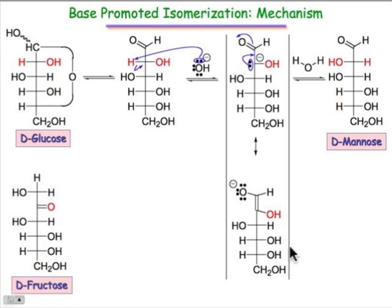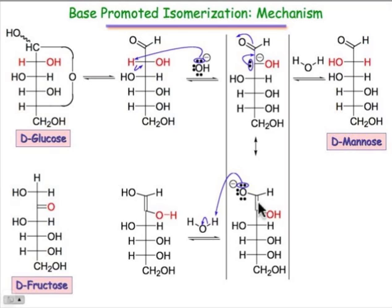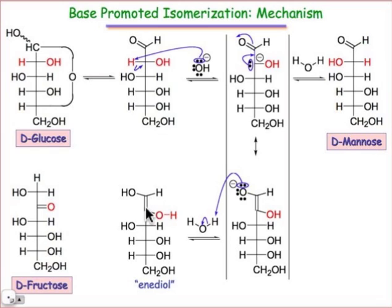From the enolate anion, that's how we're going to get into D-fructose. We're going to end up making the C2 and C3 positions equivalent. The way we'll do that is by protonating that oxygen to make what's known as an enediol. This is an important intermediate because now both of these positions — C2 as well as C1 — have equivalent states in terms of their oxidation state.